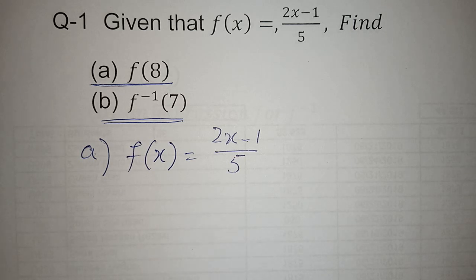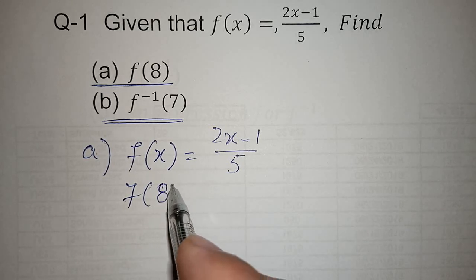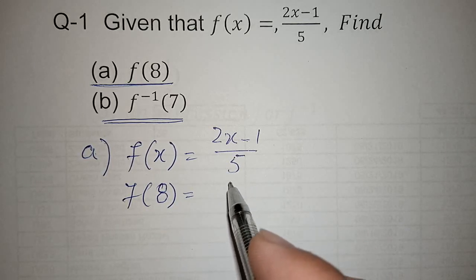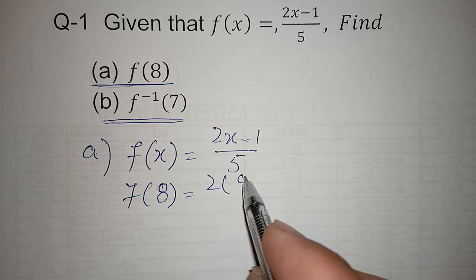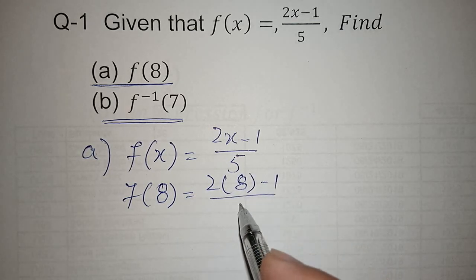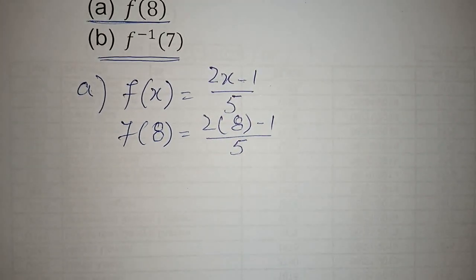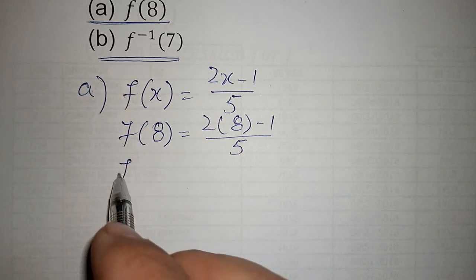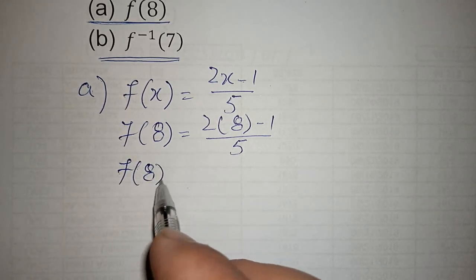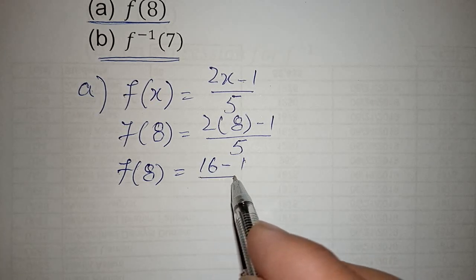This is part A. To find f(8), replace x with 8. So f(8) equals 2 times 8 upon 5, which is 16 minus 1 upon 5.